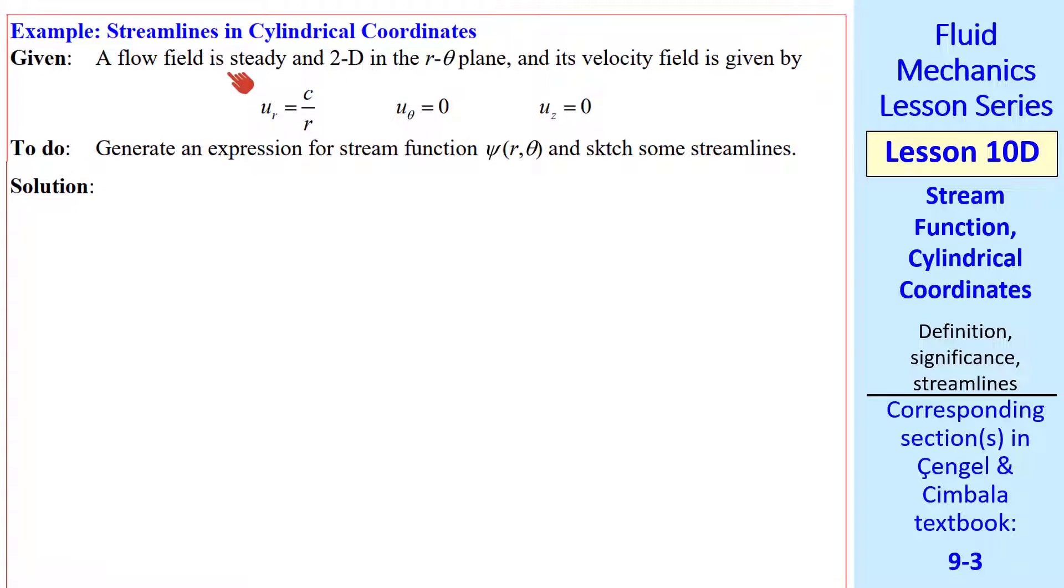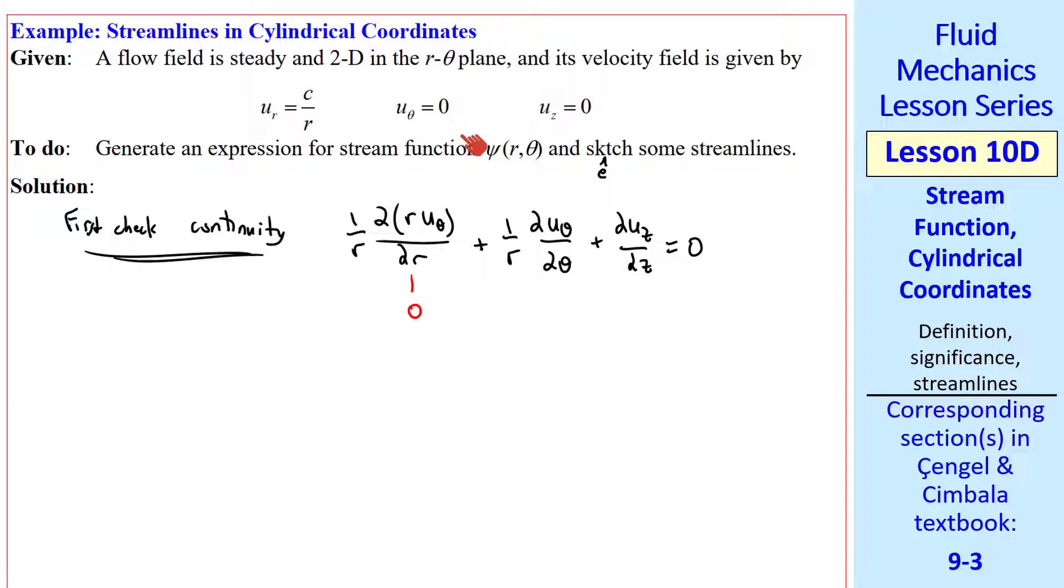Let's do another example. Here we have a steady 2D flow in the r theta plane with this velocity field. Now we want to generate an expression for stream function and sketch some streamlines. First, let's just check continuity to make sure that this is a valid incompressible flow. I write our continuity equation in cylindrical coordinates. R times u_theta gives us constant C. So the r derivative of a constant is zero. And u_theta is already zero, as is u_z. So the sum of these three terms is zero. And continuity is indeed satisfied.